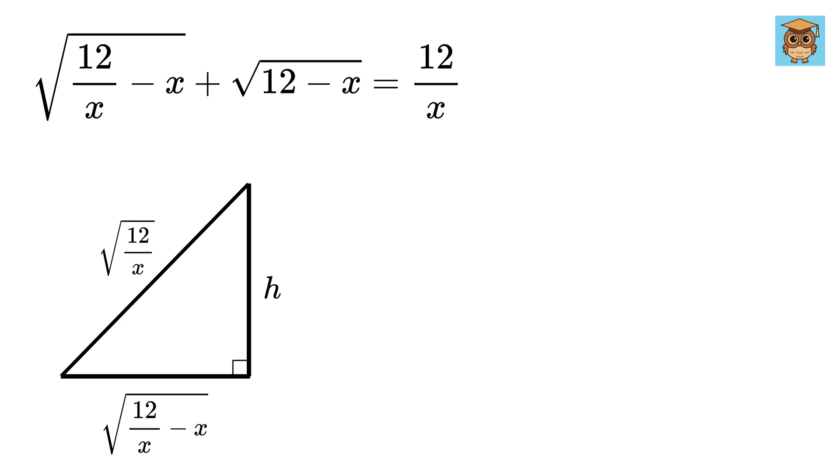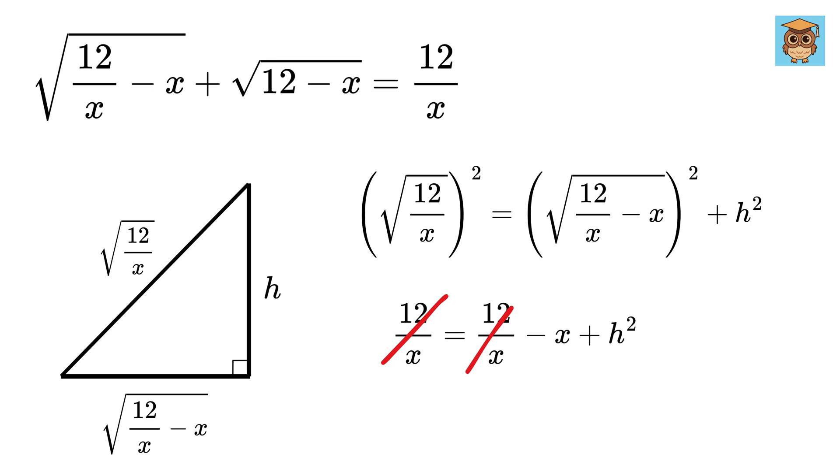Label it as h. So, using our favorite right triangle theorem, we get root 12 by x whole square equals this square plus h square. It will be 12 over x, and this will be 12 over x minus x plus h square. Wow, it gets cancelled out, and we are left with h equals root x.